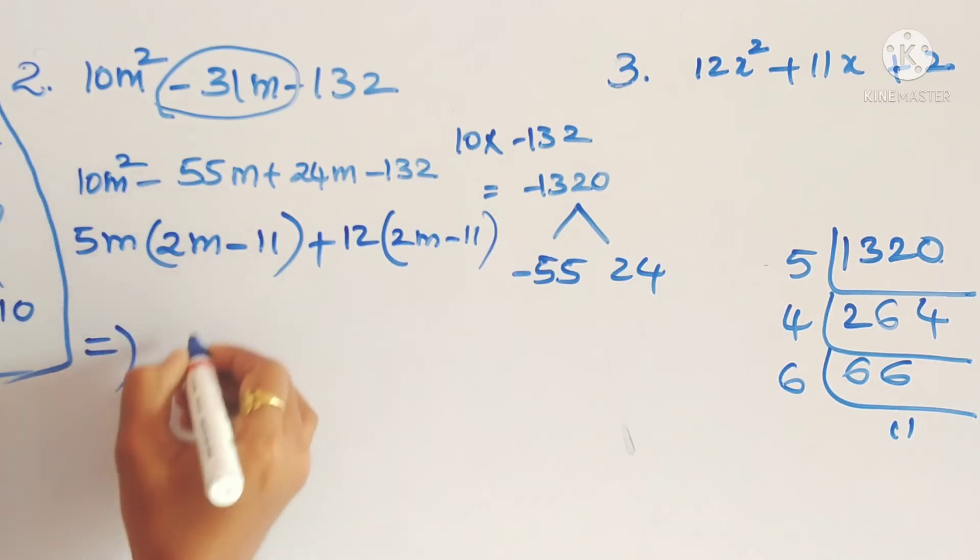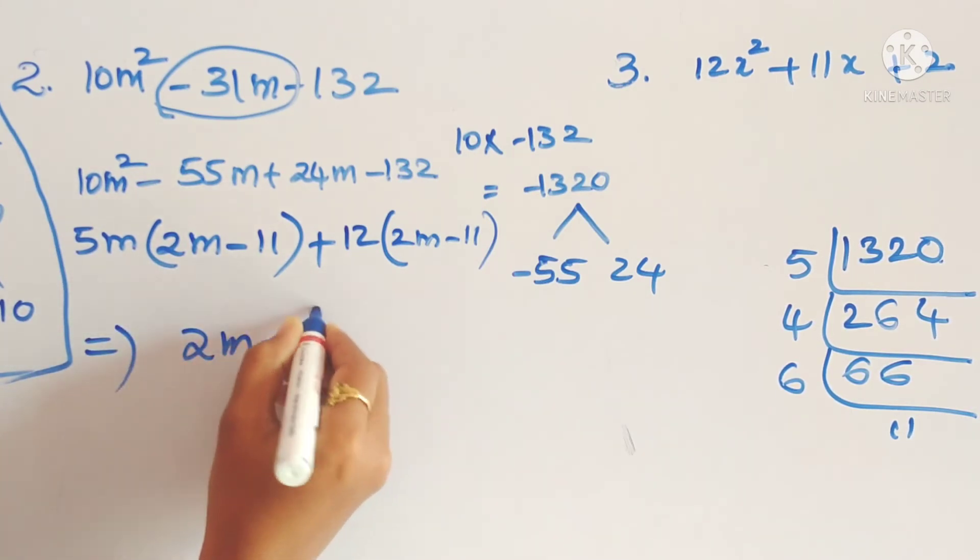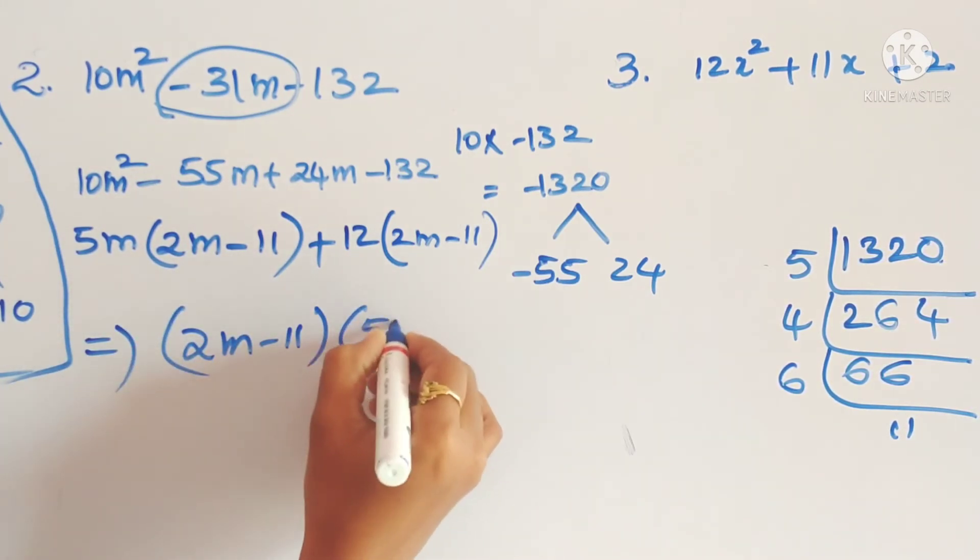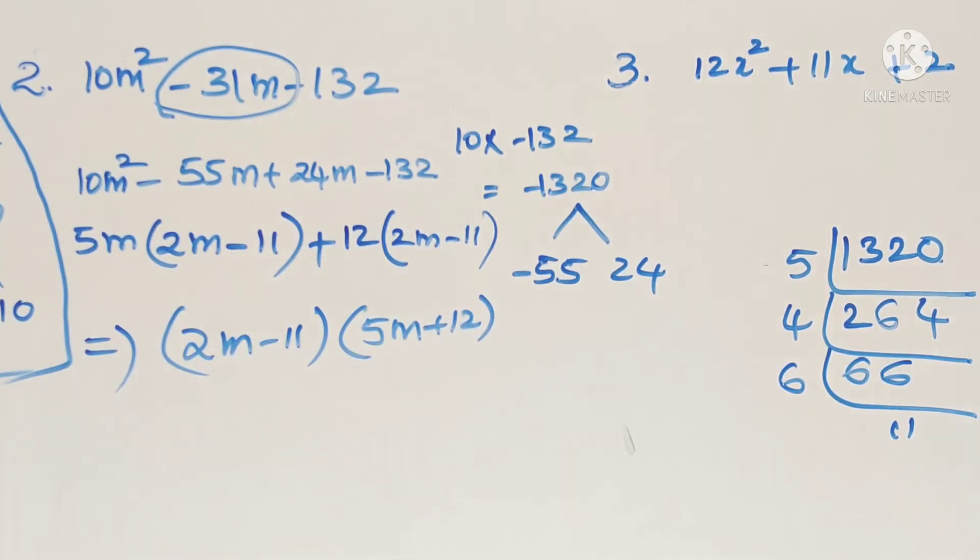So again 2m minus 11 is common. 2m minus 11 into 5m plus 12. Okay students.